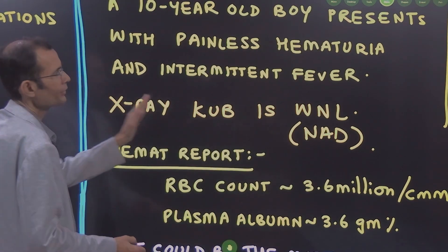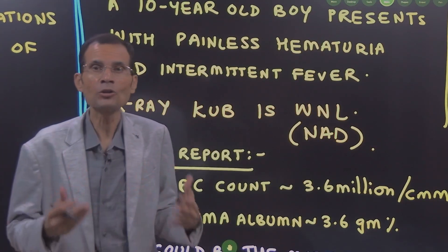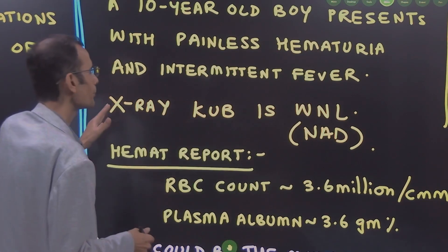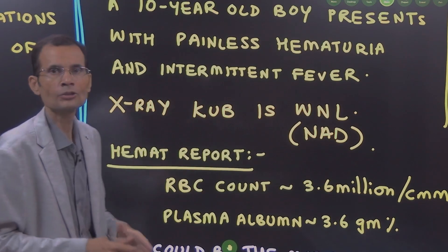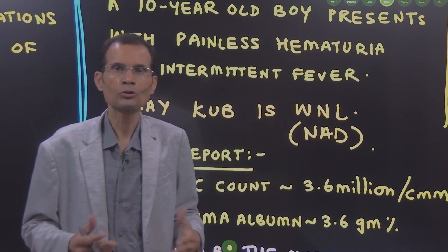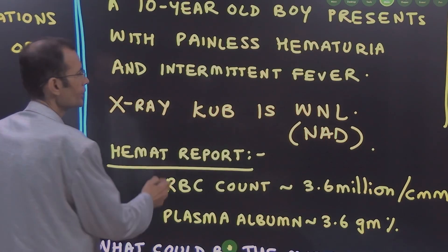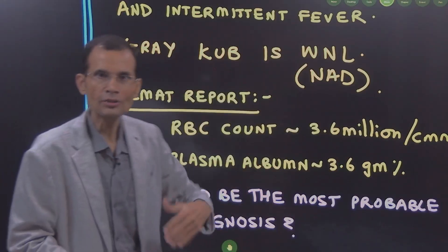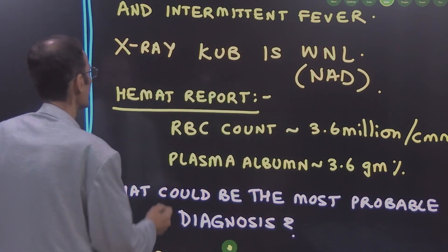The physician was probably thinking about KUB — kidney, ureter, bladder — and considering renal stones or bladder stones, but that is not the case. The stones are not there, at least not seen on x-ray.